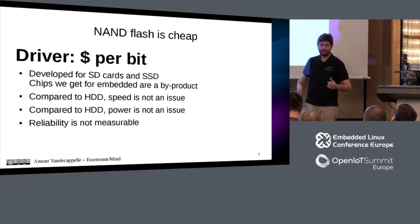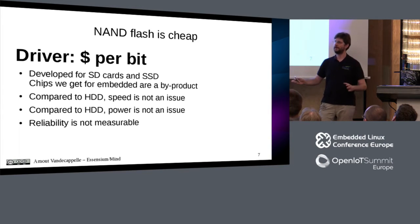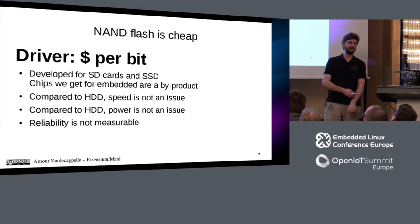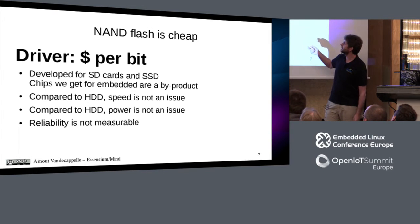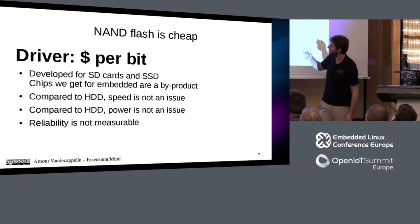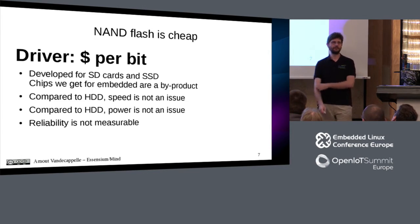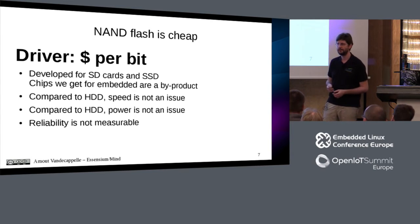When trying to understand how NAND flash works, the key thing to understand is that all this crazy stuff — and especially why it fails to work — is all designed with one thing in mind: making it as cheap as possible. Other things like reliability and speed are way less important. NAND flash was developed to replace hard disks in SD cards and SSDs. The amount of flash going into SSDs and SD cards is tens to hundreds of times more than what goes into embedded devices.